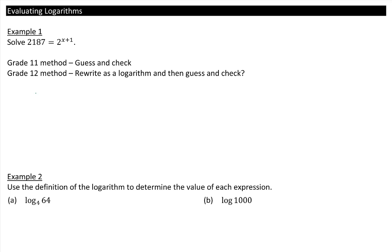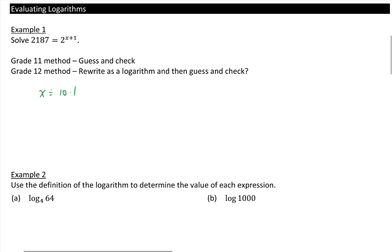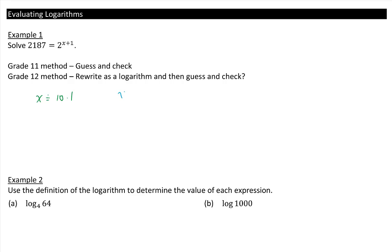Eventually you would get that x is equal to approximately 10.1. In grade 12 however we are going to isolate for the variable x. Step 1 is to rewrite it as a logarithm. Expressed as a logarithm we would get x plus 1 is equal to the log base 2 of 2,187. Then if we isolate for x we get log base 2 of 2,187 minus 1.